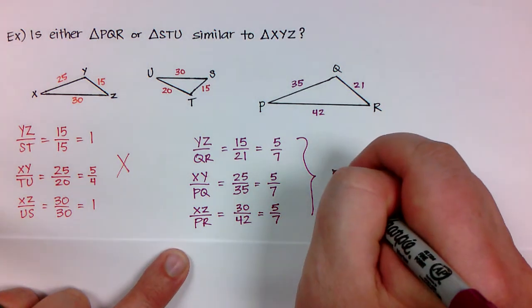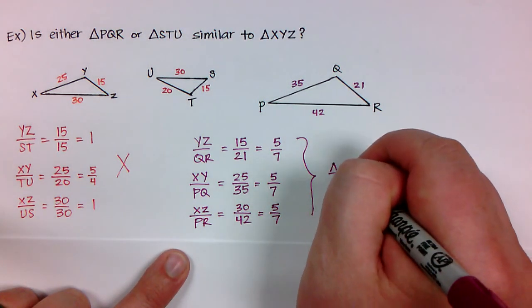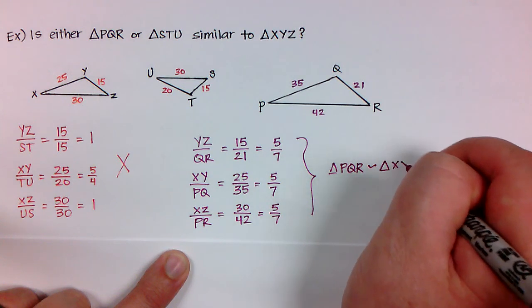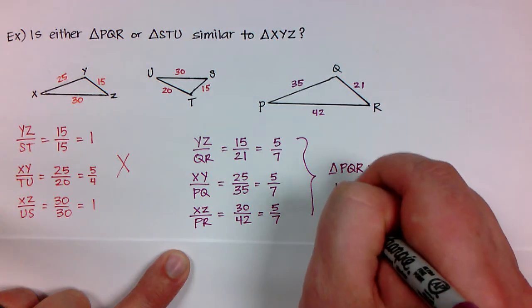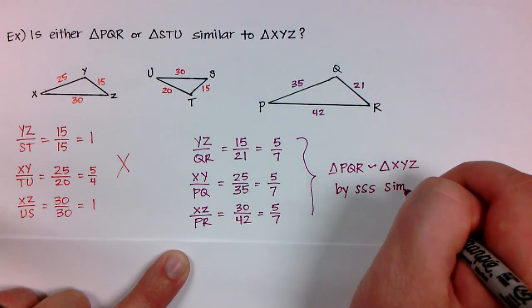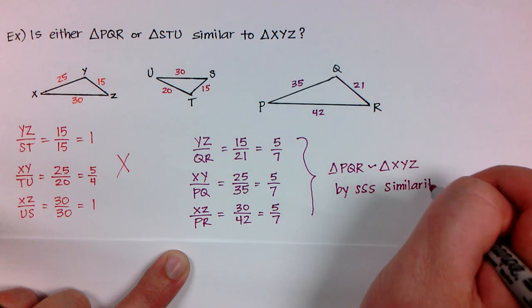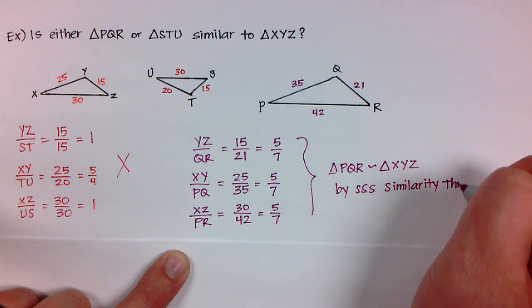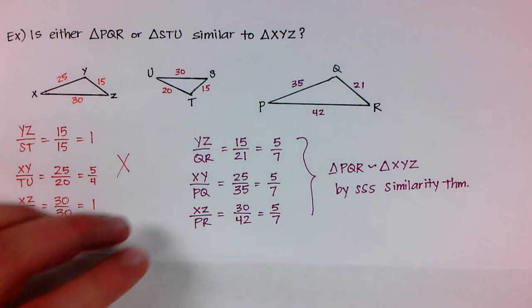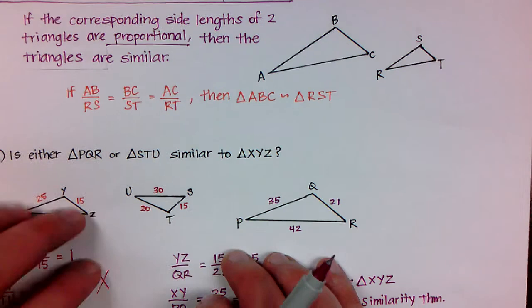So right here we just were able to find that triangle PQR is similar to triangle XYZ by the side side side similarity theorem. And I'm going to write the similarity theorem and not just side side side so that we're not thinking that it's side side side congruence theorem. Okay, so let's go ahead and look at another example.